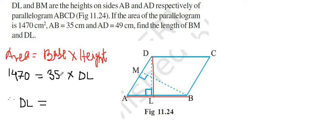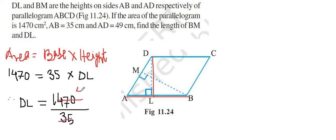Transposing 35 from the right side, it will divide 1470 on the left side. Therefore, DL = 1470 ÷ 35 = 42. So the length of DL is 42 centimeters.